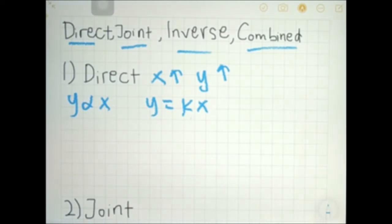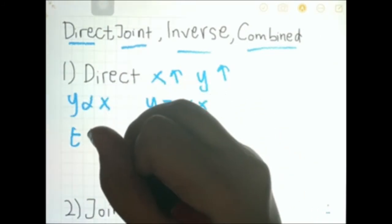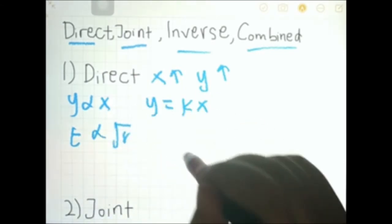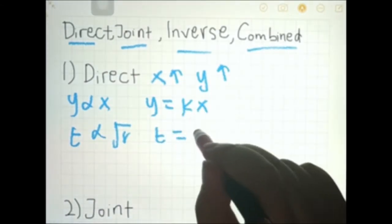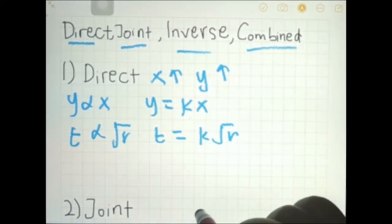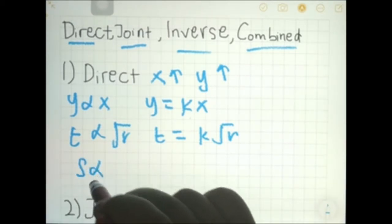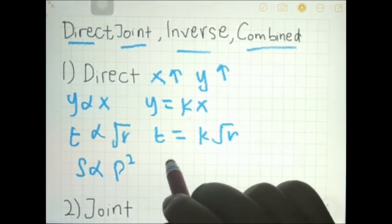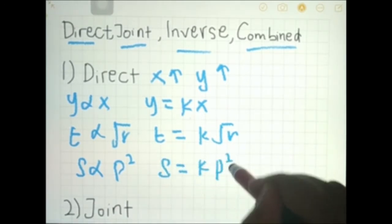What if t varies directly with square root of r? In equation form, we write it as t equals k square root of r. Don't forget the k constant. Same goes if we say s varies directly with p squared — we write the equation as s equals kp squared.